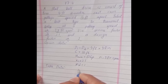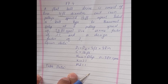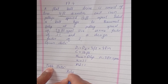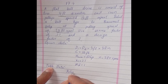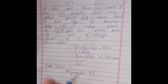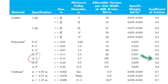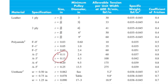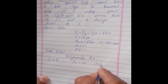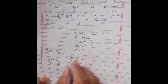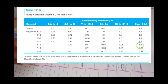To solve this problem we use tables, but first we must select the belt material. We will design using polyamide A3. From the tables: coefficient of friction μ = 0.8, Fa = 100, belt thickness t = 0.13 inches, γ = 0.042, and the pulley correction factor Cp = 1.